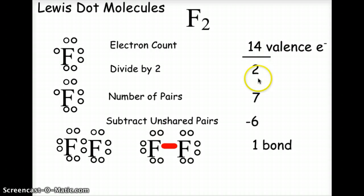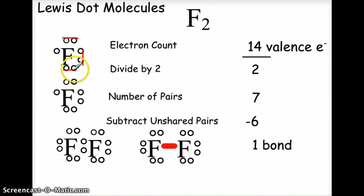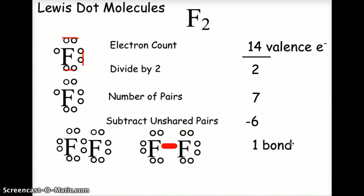We divide 14 by two, which tells us we're going to need seven pairs of electrons. Looking at each fluorine atom, we see it has three unshared pairs — one, two, three. These are unshared pairs because the electrons are already paired and are not likely to share with the other atom. Since we have three unshared pairs on each fluorine, that gives us six unshared pairs total. Seven minus six tells us we're going to need one bond between the two fluorine atoms.